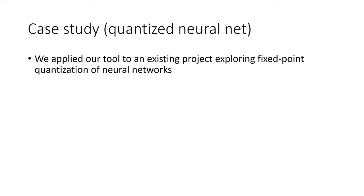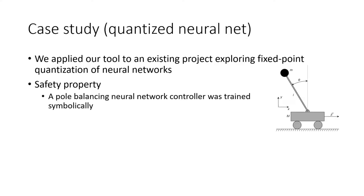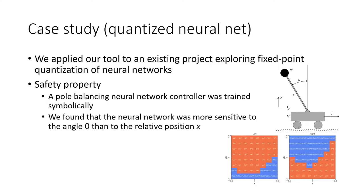We applied our tool to an existing project exploring symbolic fixed-point quantization of neural networks. In our first example, we explore a safety property of a pole balancing robot. At right, such a robot is shown. The goal is to have the robot move left or right in order to keep the attached pole vertical. We explored symbolically training a neural network controller for such a robot. Our first finding is that the training algorithm has a preference for using the pole's angle to determine the motion of the robot. Here we see that for negative angles the robot decides to move left.